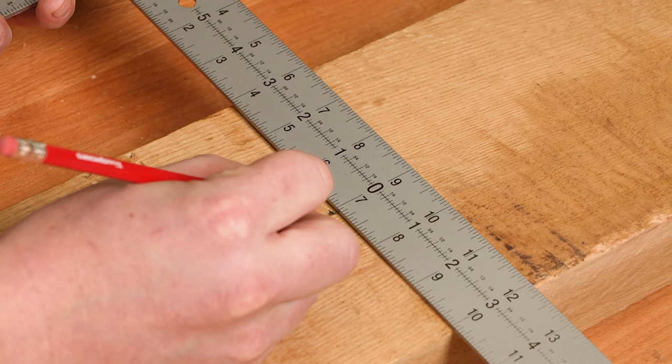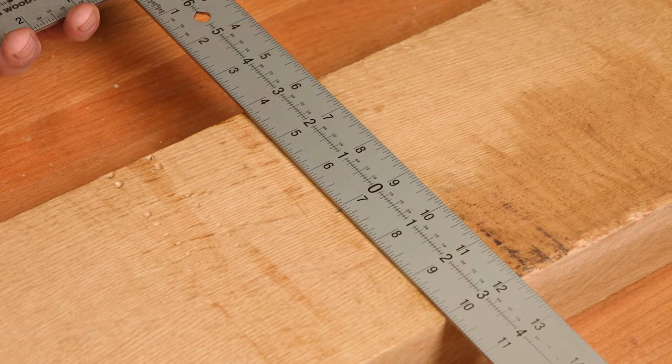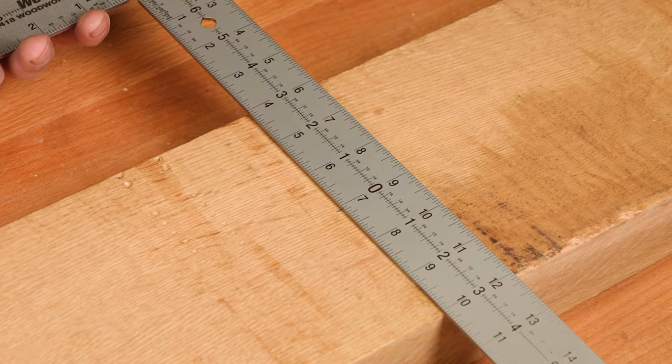One side of each square includes a center scale on both the blade and tongue, so you can quickly find the exact center of your board, even if it's not quite a perfect dimension.